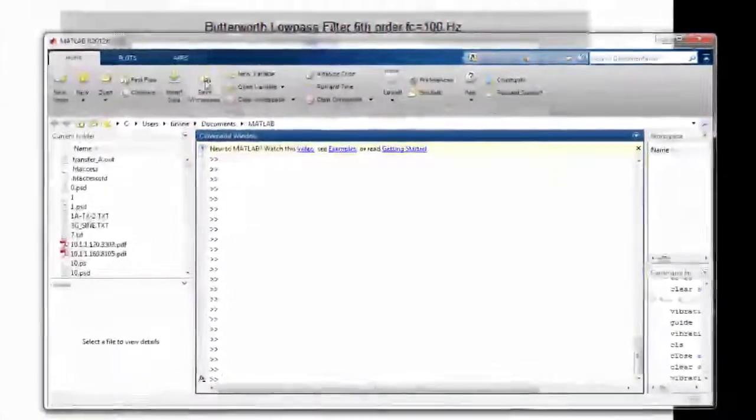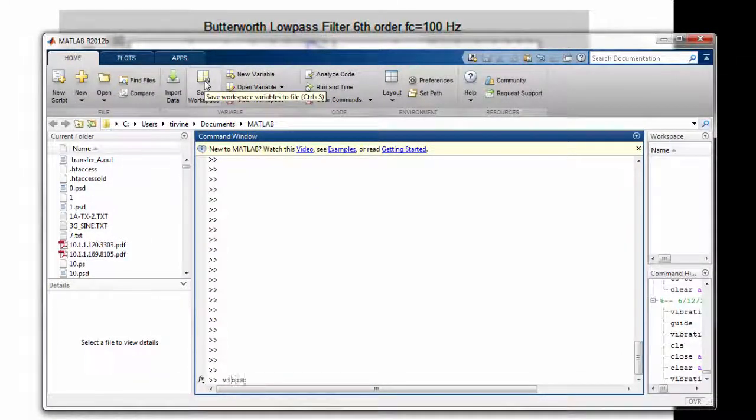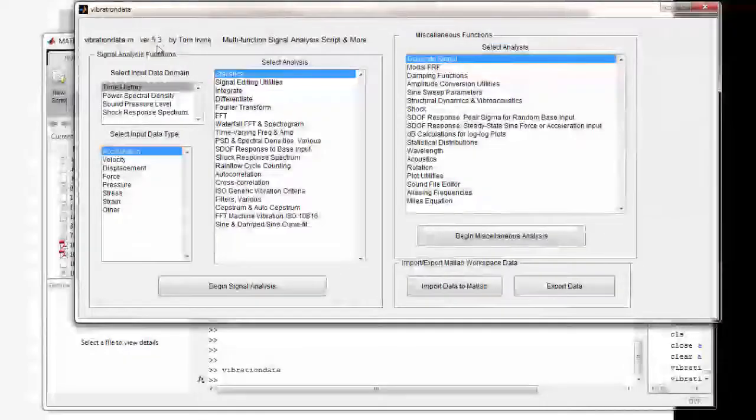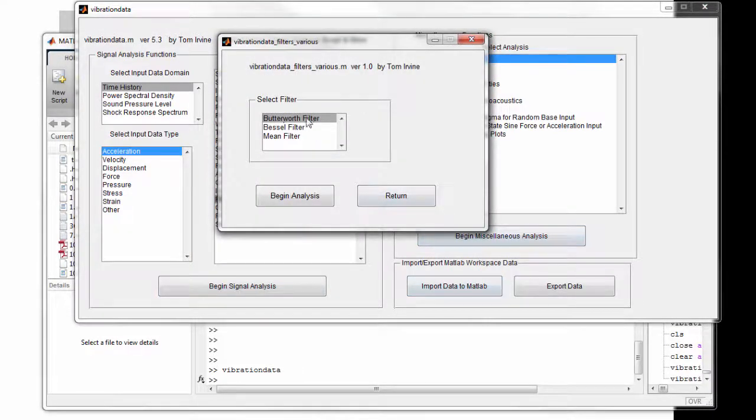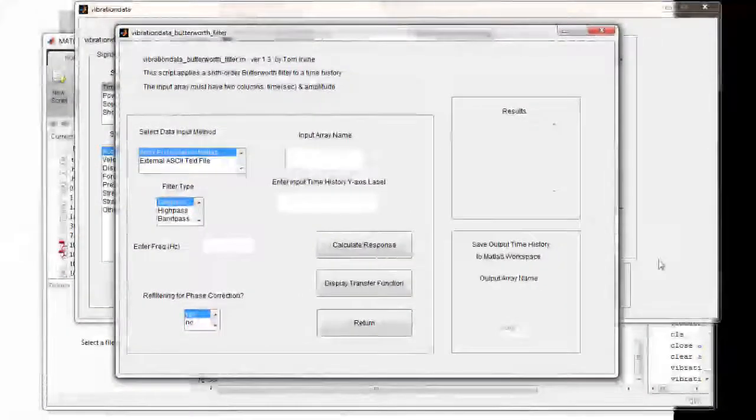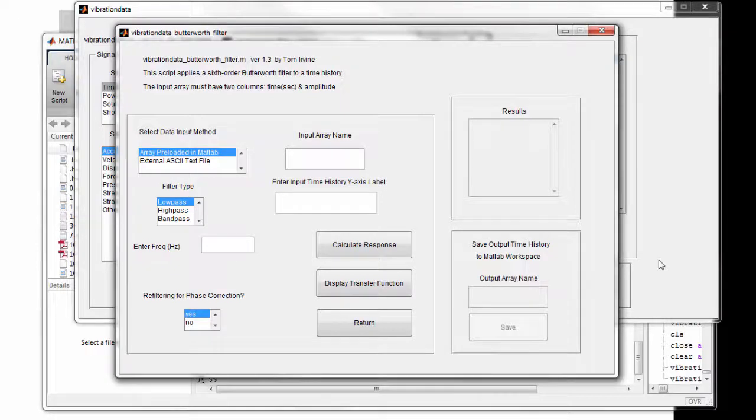Let's go to the MATLAB GUI package. I'm going to type in vibration data to call up our GUI package. We're up to version 5.3 and rising. We're going to have a time domain input, time history input, and we're going to go to filters various. We'll begin our signal analysis. We're going to do a Butterworth filter. Even before we call in our time history, we can display what the transfer function is. I'm going to put in 100 hertz. This will be a low-pass filter.